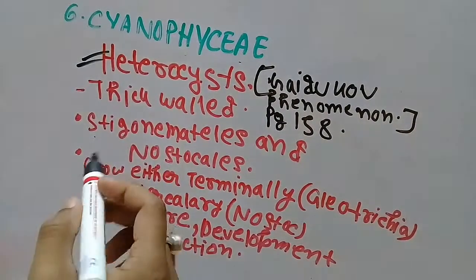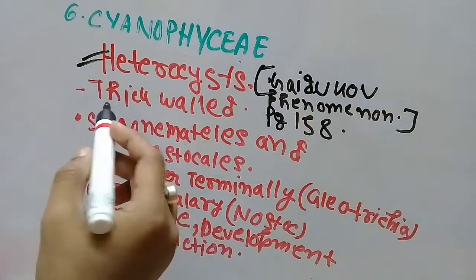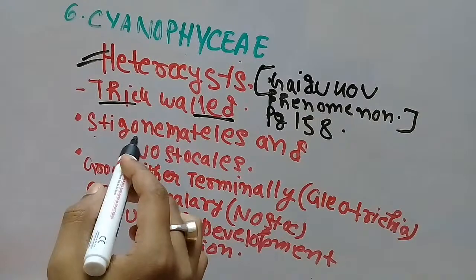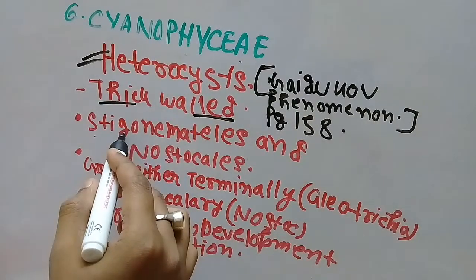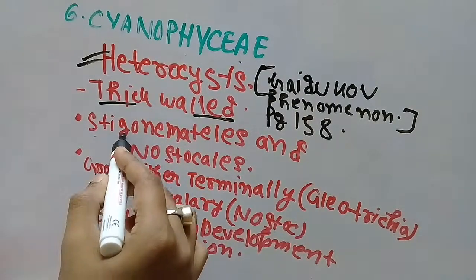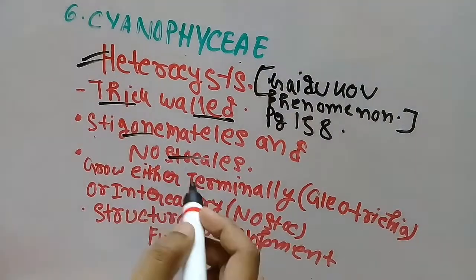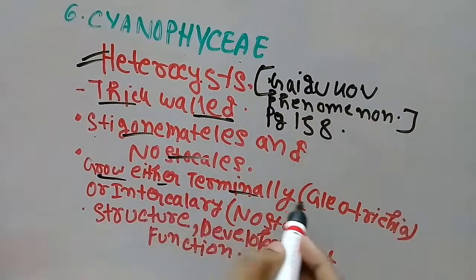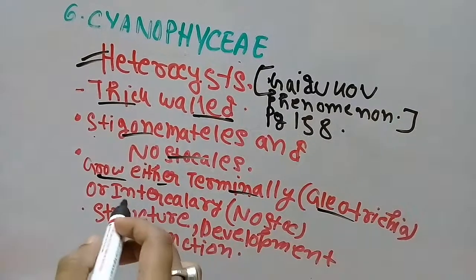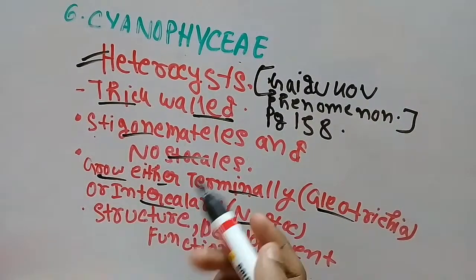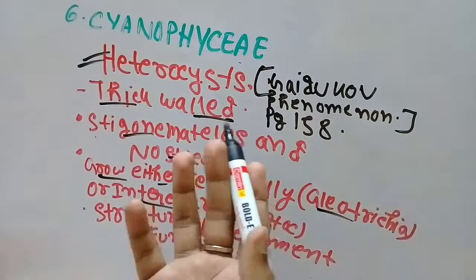Heterocyst is a very important topic in Cyanophyceae. These heterocysts are basically thick-walled and they are found in members of Stegonematalis and Nostocales. They either grow terminally, that is in Cliotrichia, or intercalary, that is in Nostoc, or they can grow both terminally and intercalary, as seen in Anabaena.